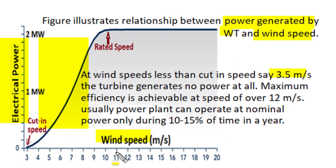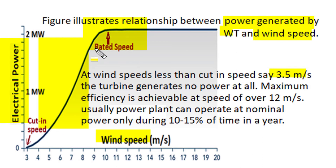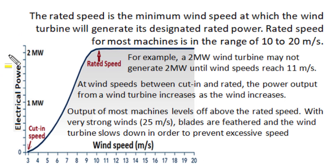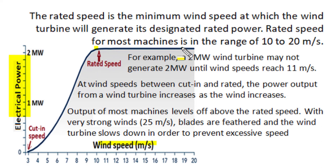The maximum efficient electric output is achieved at a wind speed of around 11 or 12 meters per second. Usually, wind power plants can be operated at such optimum wind speed conditions only 10 to 15 percent of the time in a year, as most of the time wind speeds are less than this ideal condition, and sometimes wind speed can become extremely high too. In the electric power output and wind speed relationship, rated speed is the minimum speed at which a wind turbine will generate its designated rated power — typically between 10 to 20 meters per second for the majority of wind turbine machines.